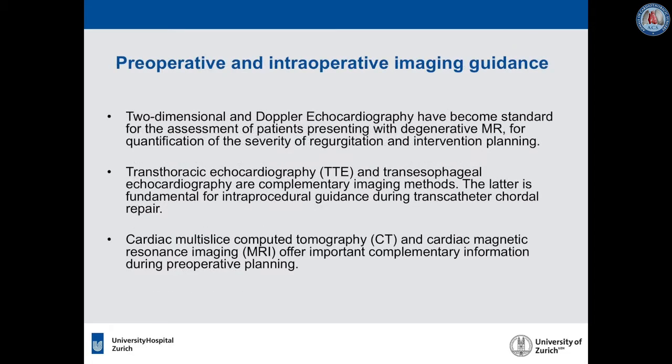Two-dimensional and Doppler echocardiography have become standard for the assessment of patients presenting with degenerative MR, for quantification of the severity of regurgitation and intervention planning. Transthoracic and transesophageal echocardiography are complementary imaging methods; the latter is fundamental for intraprocedural guidance during transcatheter cordal repair. Cardiac multislice CT and cardiac MRI offer important complementary information during pre-operative planning.